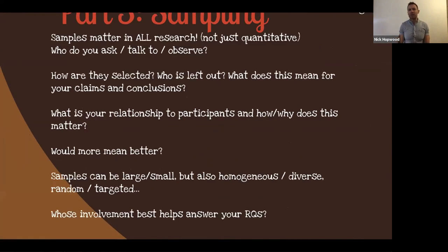Then we have sampling. Loads of people say to me, yeah, but I'm doing qualitative research, sampling isn't really a thing. The language might feel a bit uncomfortable, a bit from positivist or hard science research, but the questions still apply. Samples matter in all research, even if you're not got human beings involved, you're just in the archive. Well, which things are you going to read? Assuming there are human beings involved in your research, who are you asking, talking to, observing? How are they selected? Who's in and who's left out? What does this mean for your claims and conclusions? What's your relationship to the participants and why, and how does that matter?